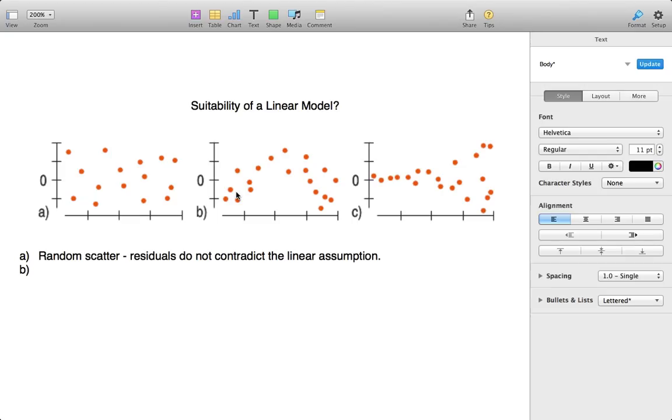Whereas if we see here in part B, there's a definite arc. And what this might indicate is that there's some type of curved relationship with the data. It seems as if the data points are below the regression line, and then here it's above, and then here it's below.